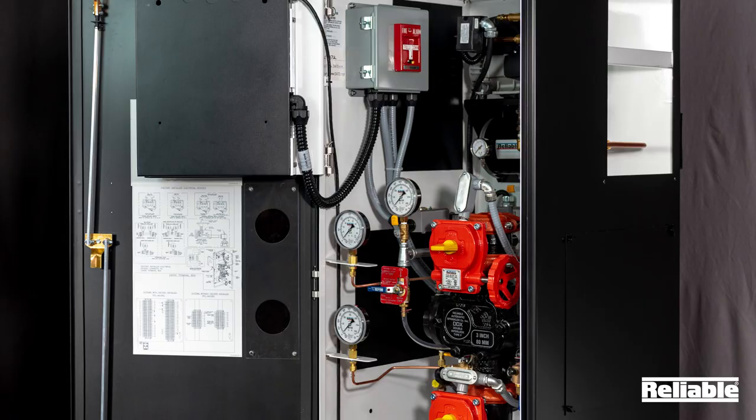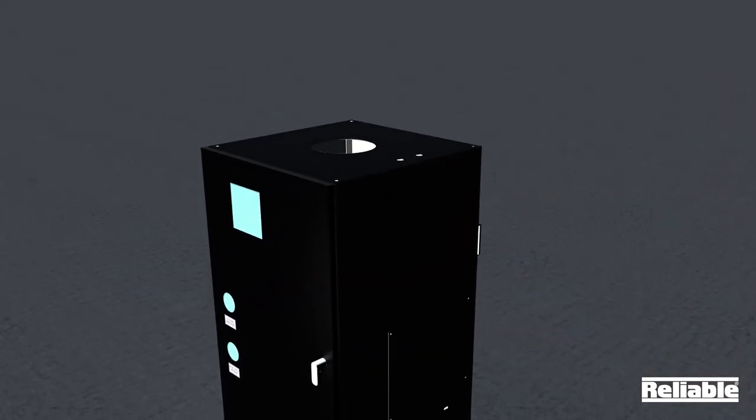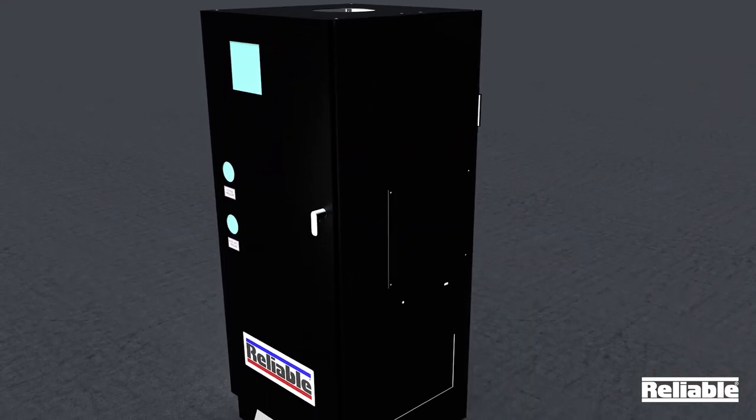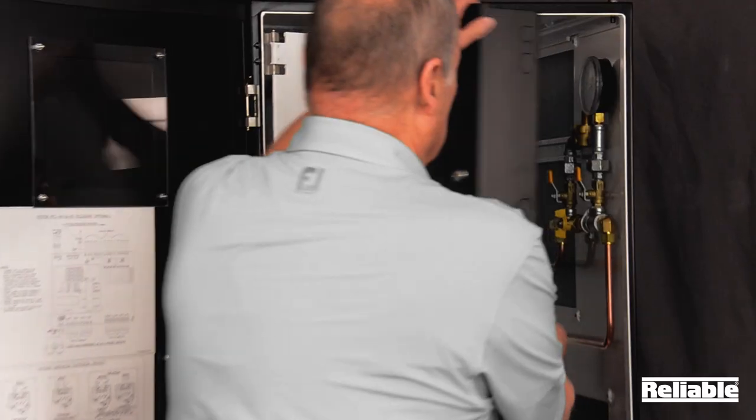The reliable prepack cabinet is constructed from 12 gauge powder coated steel, black on the outside with a high reflective white interior to improve visibility during service and maintenance.